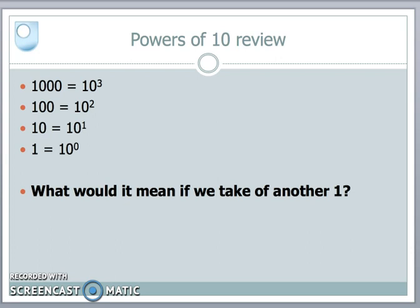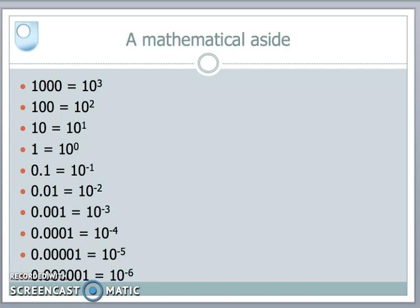Now, what would happen if we took another 1 off that 10 to the power of 0? Well, 0 minus another 1 gives me an integer number minus 1. It's a negative 1. And how far can we keep this going? Well, we can keep going it forever.